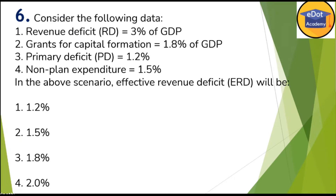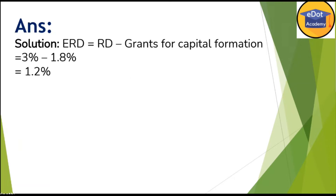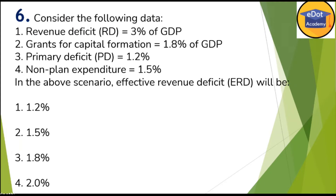Now this is a very good question. Consider the following data: revenue deficit is 3% of GDP, grant for capital formation is 1.8% of GDP, primary deficit is 1.2%, and non-plan expenditure is 1.5%. Find the effective revenue deficit. The formula for effective revenue deficit is: revenue deficit minus grant for capital formation. So 3% minus 1.8% gives 1.2%. The answer is 1.2% — option one is correct.